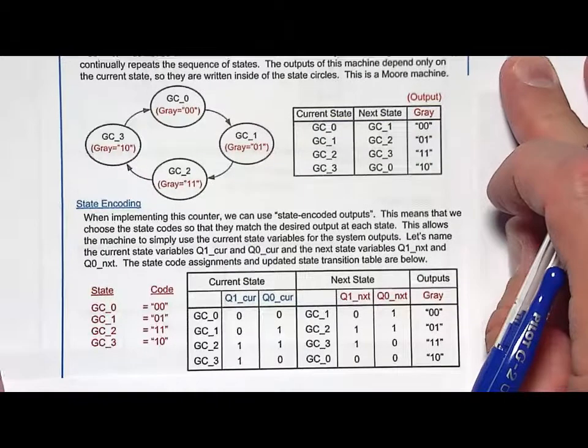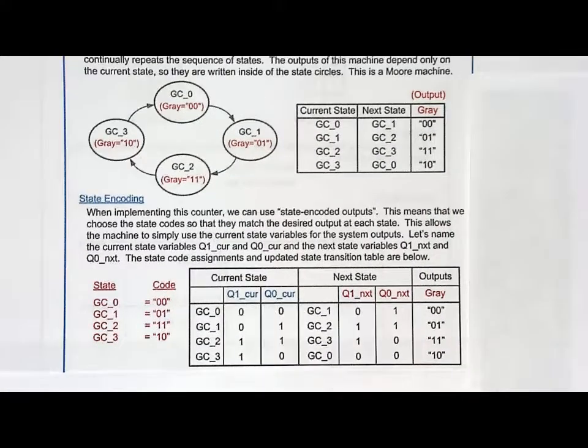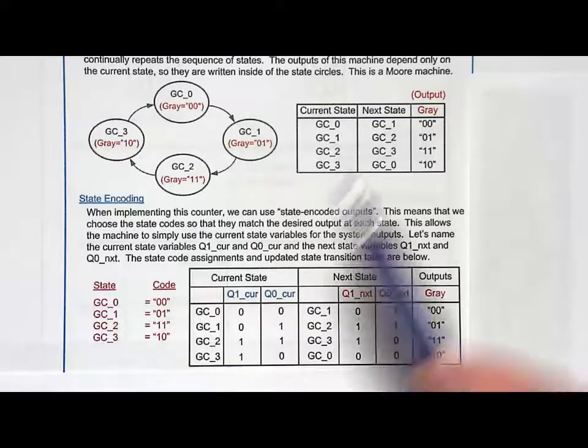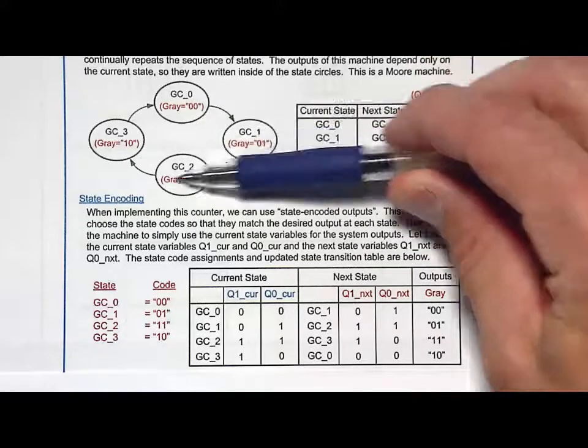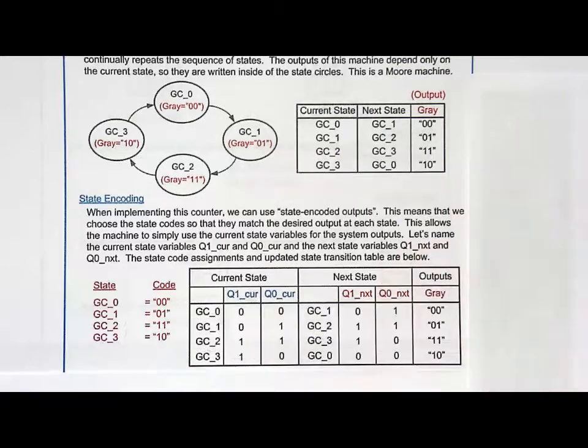We're going to take that table and expand it and insert into it the state variables. Here's how we got to our final state transition table. We're doing the state memory synthesis. When I do the state memory synthesis, I first assign the state codes. Now look what I'm going to do. GC0 is 00, GC1 is 01, GC2 is 11, GC3 is 10. That matches the outputs. Notice that this is not a binary pattern. This would be encoding the states in gray code.